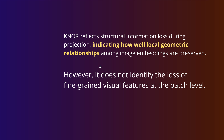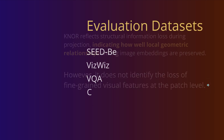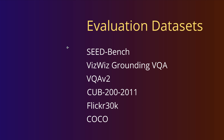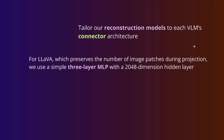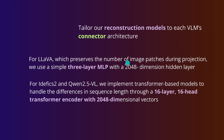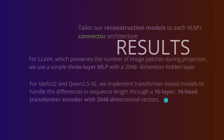However, Knorr does not identify the loss of fine-grained visual features — for example, identifying single letters or characters in an image at the patch level. For the reconstruction approach, they used public evaluation datasets. For LLaVA, they implemented a simple three-layer MLP reconstructor. For idefics and Qwen, they used a transformer encoder — 16 layers, 16 heads, in a 2,048-dimensional vector representation.